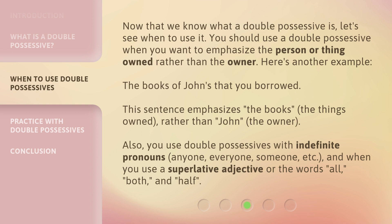Here's another example: 'the books of John's that you borrowed.' This sentence emphasizes 'the books' — the things owned — rather than 'John,' the owner. Also, you use double possessives with indefinite pronouns — anyone, everyone, someone, etc. — and when you use a superlative adjective or the words all, both, and half.